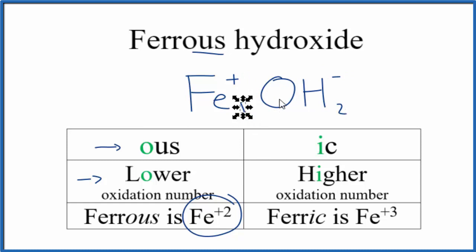We don't really need to write the 1. Clean up these charges. And because we have 2 hydroxides, each one is 1 minus, we need to put parentheses around the OH.